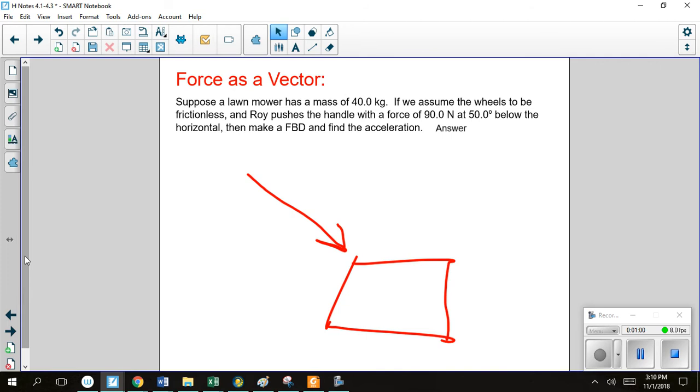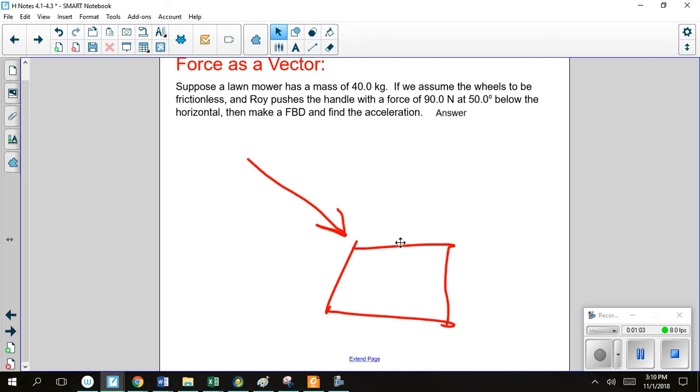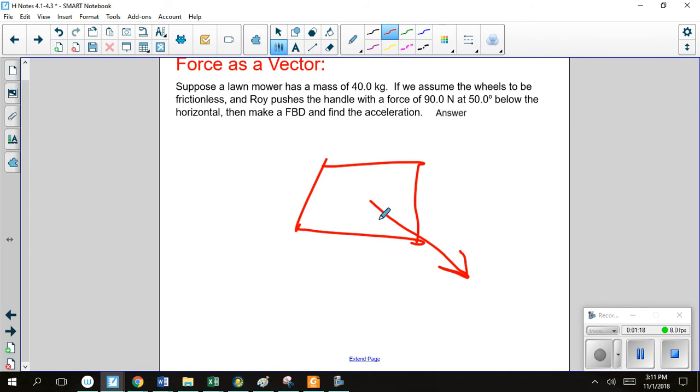Alright, so we're left with the startings of a free-body diagram. So our box here is having a force going out of it. Alright. Now that force is making an angle of 50 degrees below the horizontal. So if you can picture the horizontal over here, this angle right there is 50 degrees. Alright. We are applying a force of 90 newtons. And some of that force is being applied downwards in a negative direction.